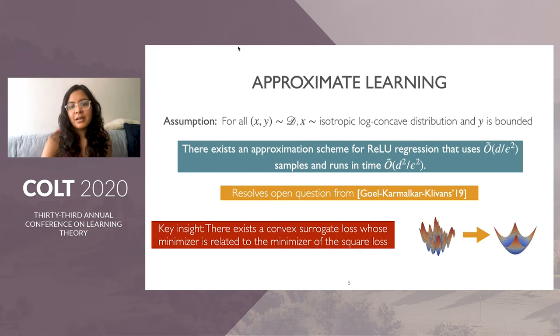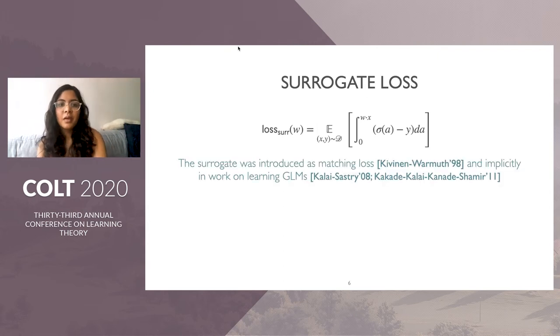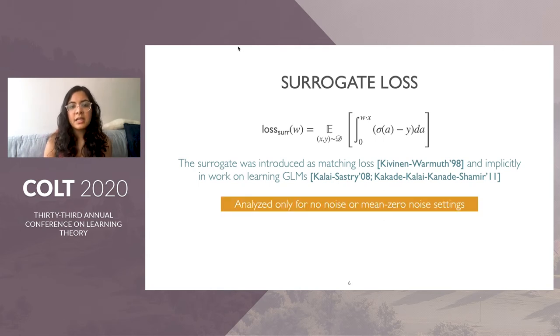Our key insight is to show that there exists a convex surrogate loss whose minimizer is very closely related to the minimizer of the non-convex squared loss. Because this is convex, we can easily optimize it. Let me jump into technical details. This is what the surrogate loss looks like. This surrogate was introduced in the 90s by Kivinen and Vermuth, called the matching loss, and is implicitly present in work on generalized linear models. In both settings, this was analyzed for the no noise setting.